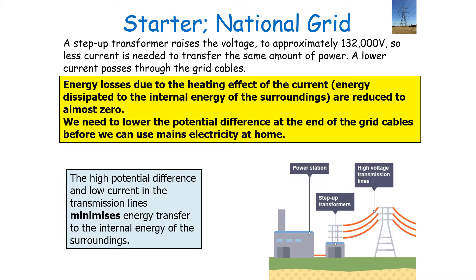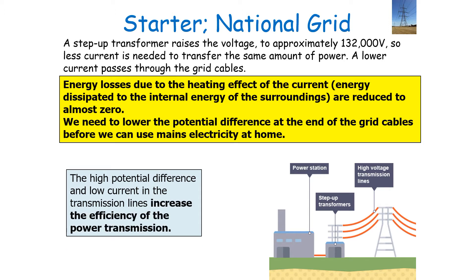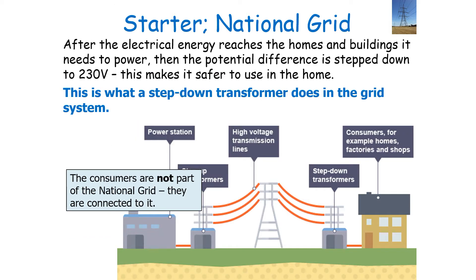The step-up transformer raises the voltage to approximately 130,000 volts, so less current is needed to transfer the same amount of power, meaning a lower current passes through the grid cables. The energy losses due to the heating effect of the current are reduced to almost zero. We need to lower the potential difference at the end of the grid cables before we can use mains electricity at home. The high potential difference and low current in the transmission lines minimises energy transfer to the surroundings and increases the efficiency of transmission.